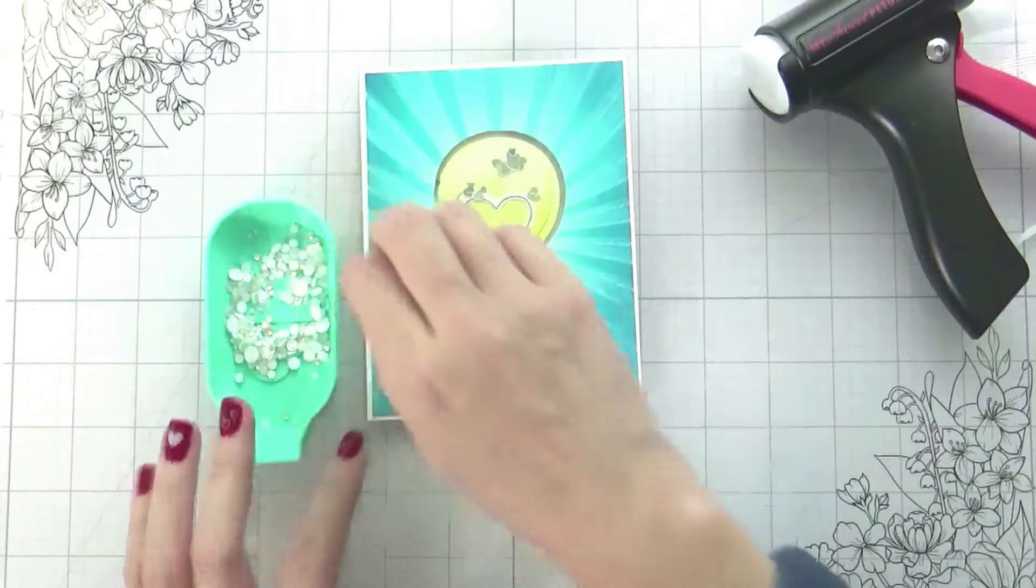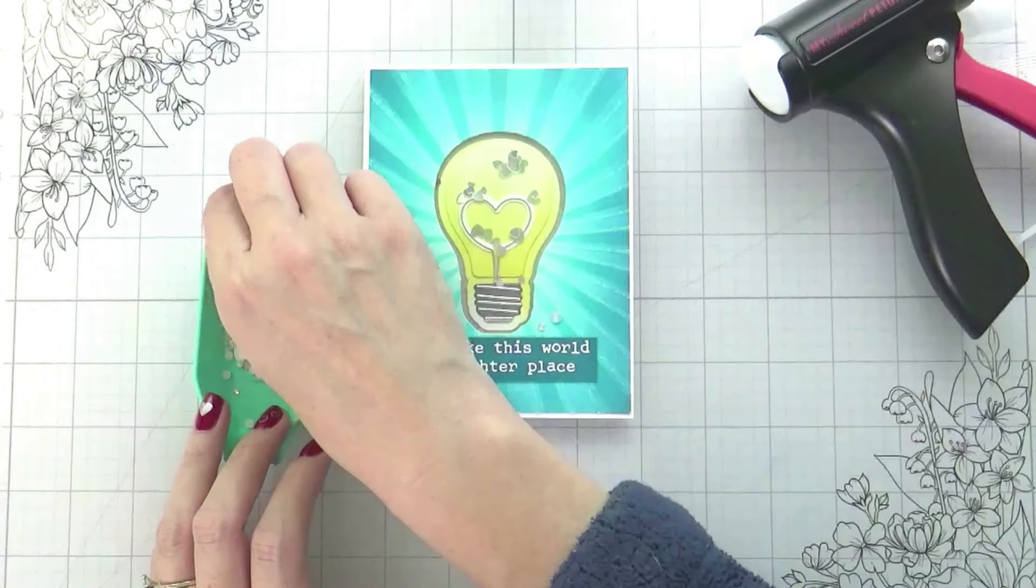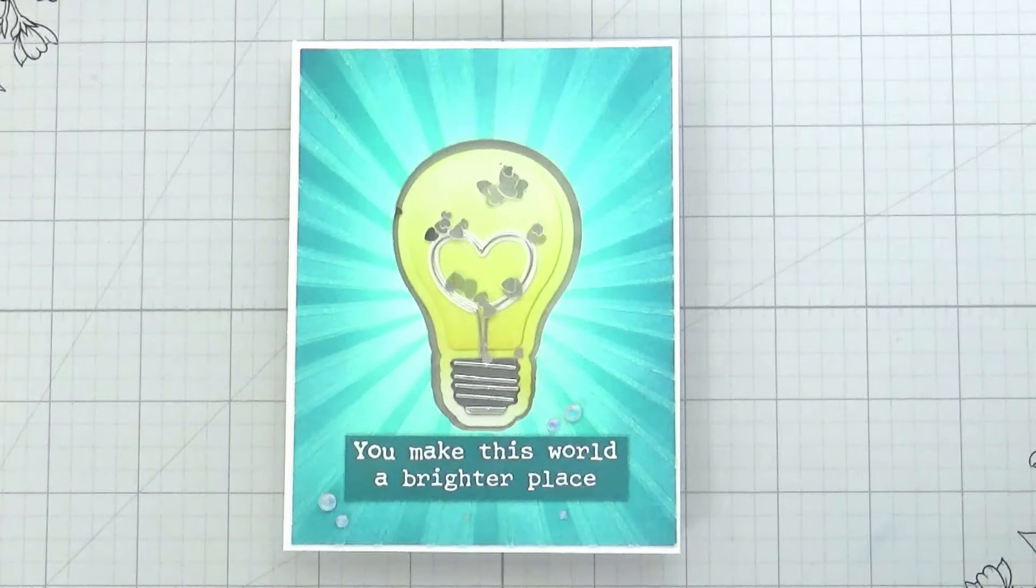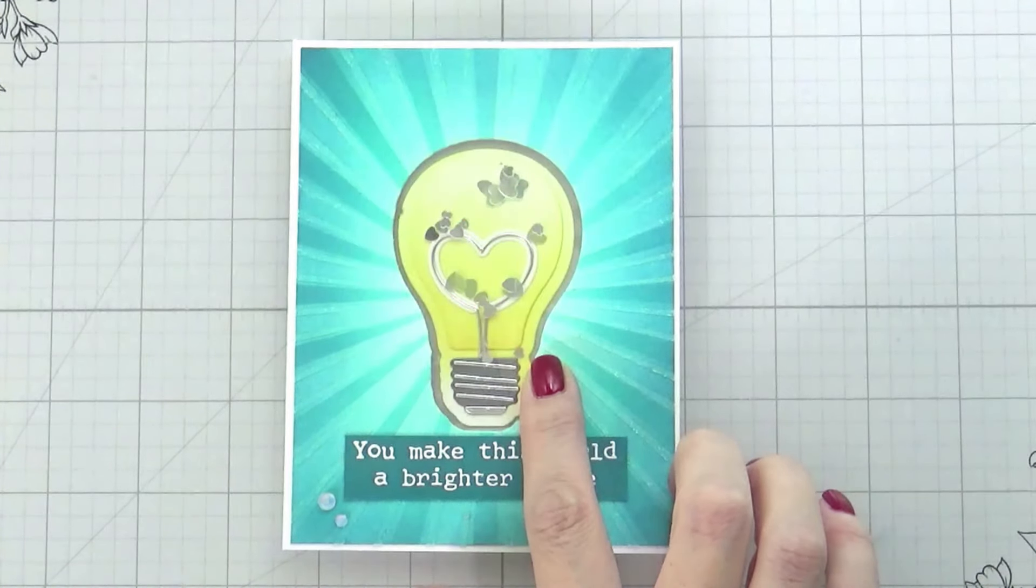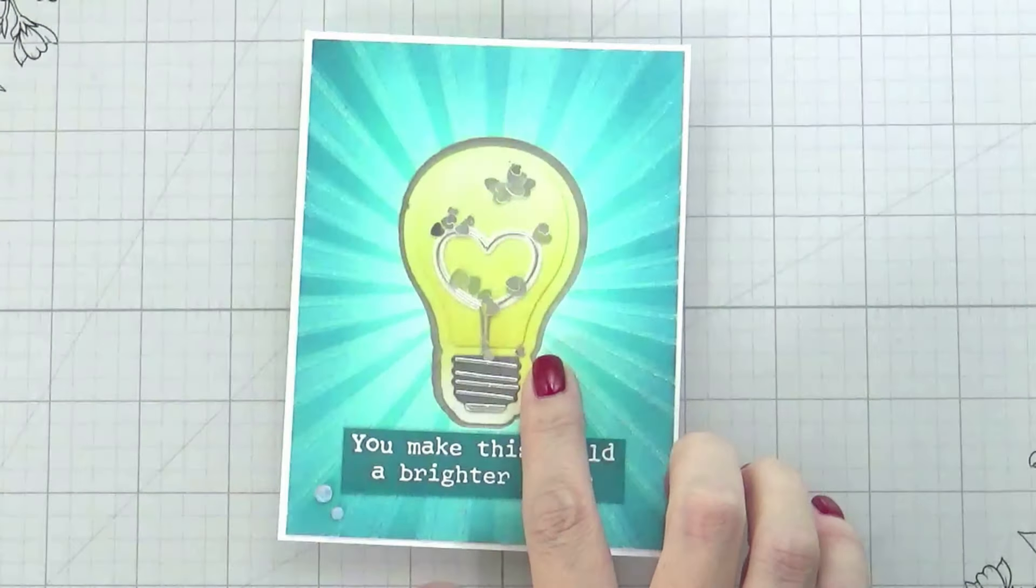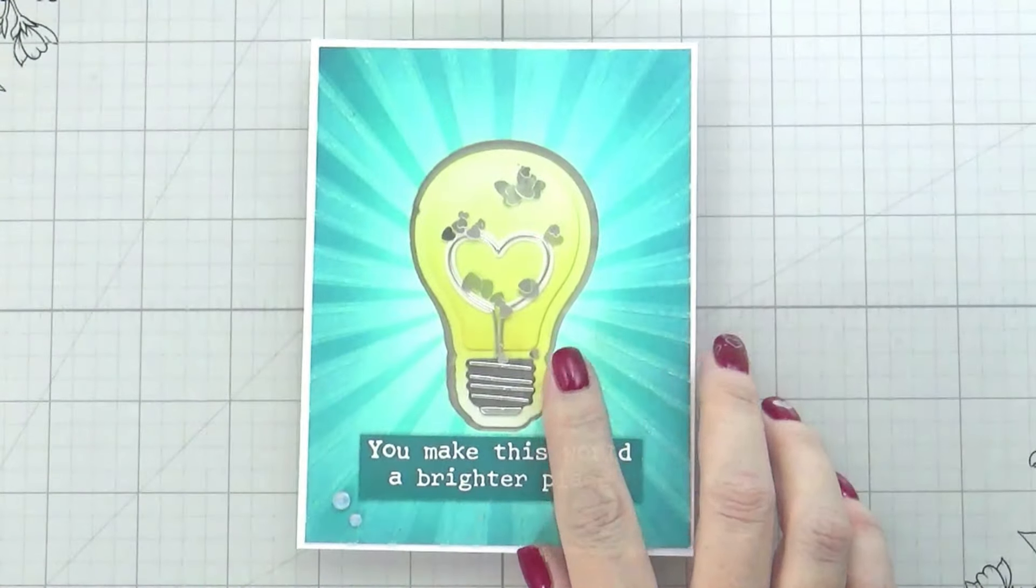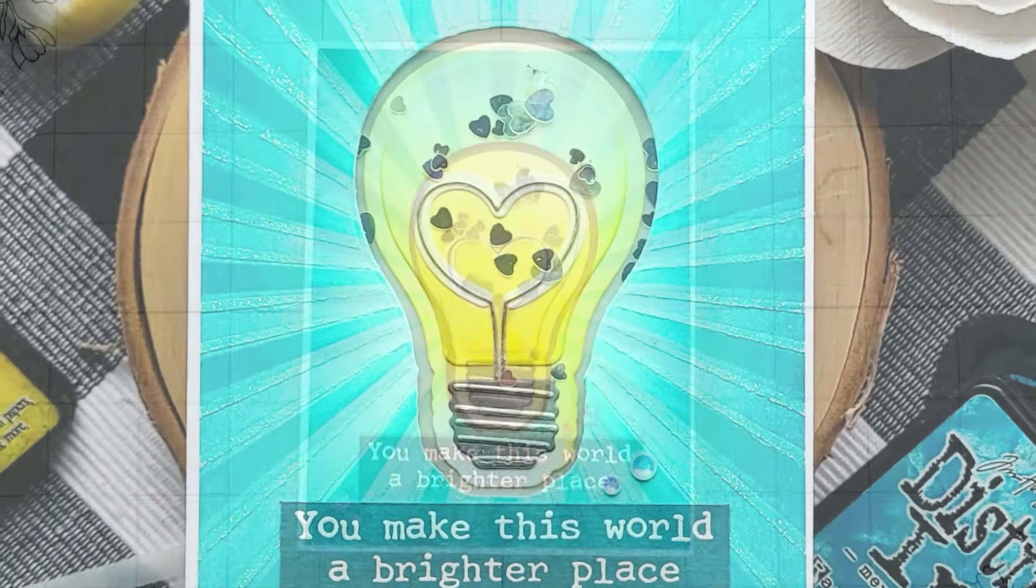So for the sentiment, as you saw, I did white heat emboss this on a slightly darker piece of teal cardstock. In order to finish the card off, I am using I think this is Moonstone. I tried to match the sequined hearts as close as I could with the little rhinestones.